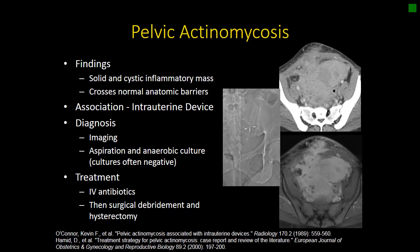Switching gears, we're going to talk about the most common form of chronic pelvic inflammatory disease: pelvic actinomycosis. Pelvic actinomycosis tends to present as a large, solid and cystic inflammatory mass. The key feature is that it does not respect normal borders — actinomycosis produces proteases and enzymes that allow digestion of the extracellular matrix and spread of infection through fascial planes.